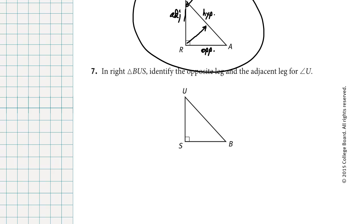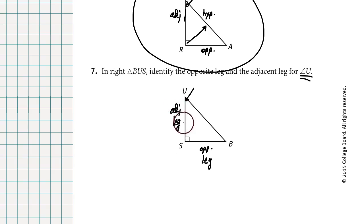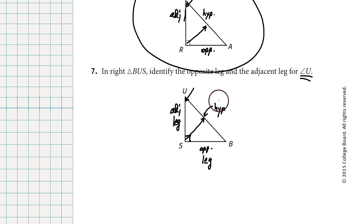Let's go to number 7. In right triangle BUS, identify the opposite leg and adjacent leg based on angle U. Focus your attention on angle U. Across the triangle from U is the opposite leg. Forming angle U along with the hypotenuse is the adjacent leg. The other side is the hypotenuse, which is always across from the right angle.